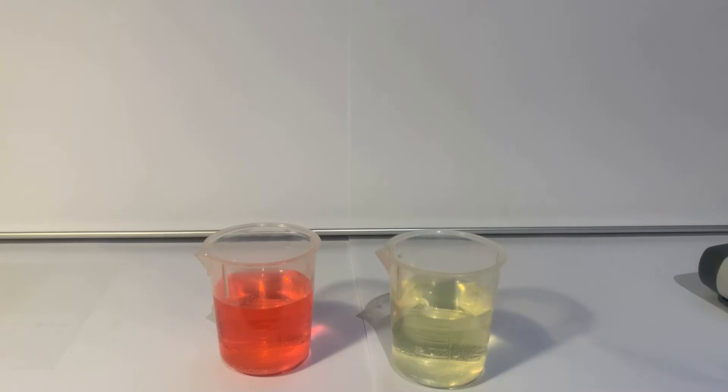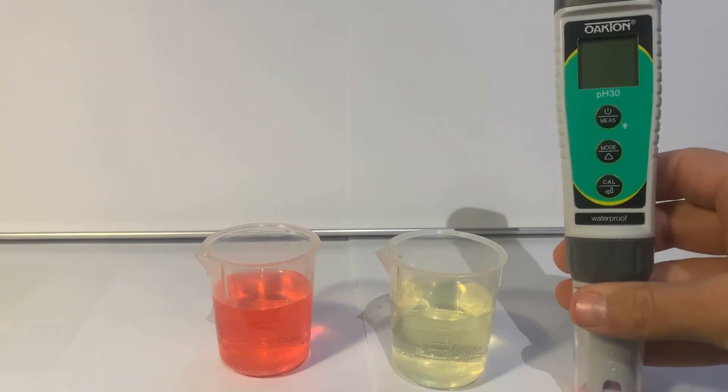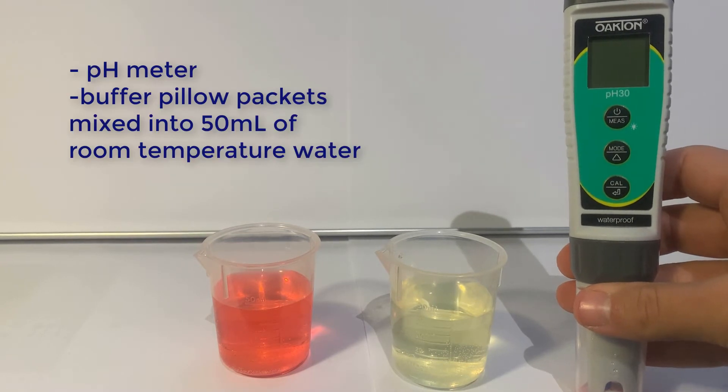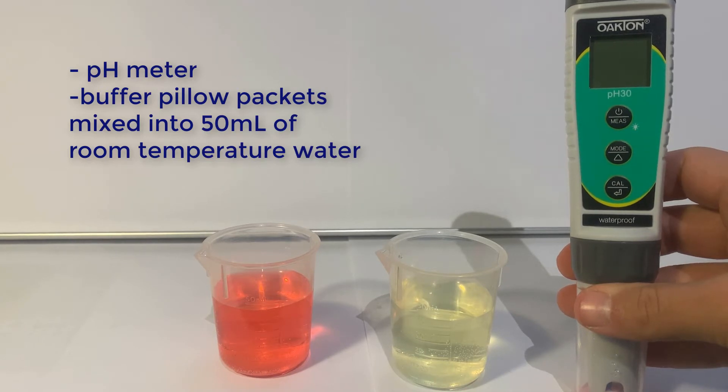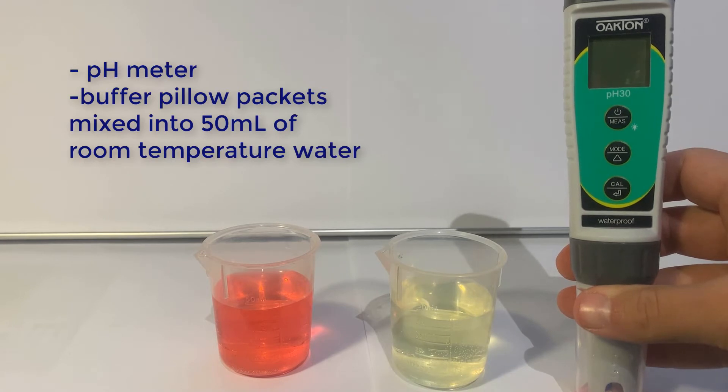The process is the same as the older meter, but the buttons are slightly different. You will need your pH meter, your pillow packets that bracket your normal reading mixed into 50 milliliters of room-temperature water, and a cup of water or your squeeze bottle to rinse off your probe.